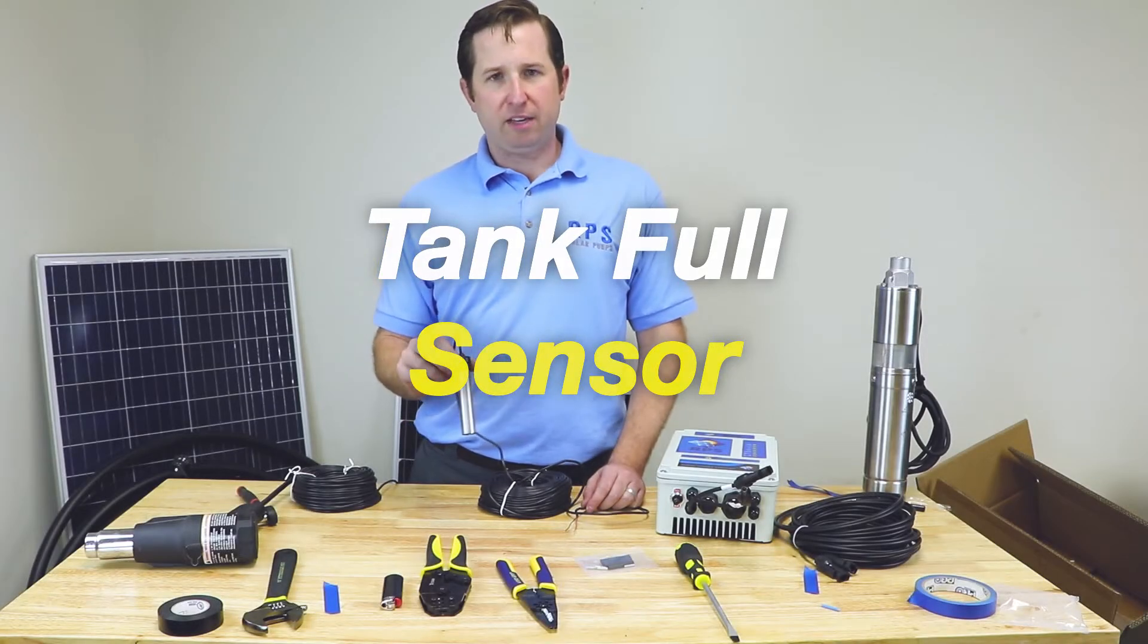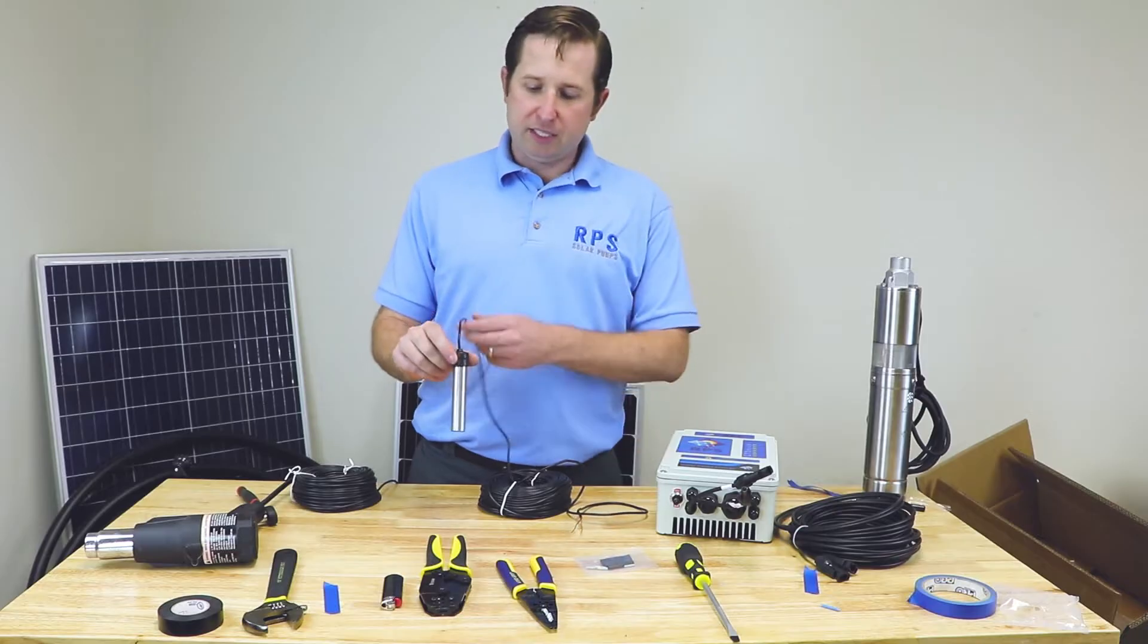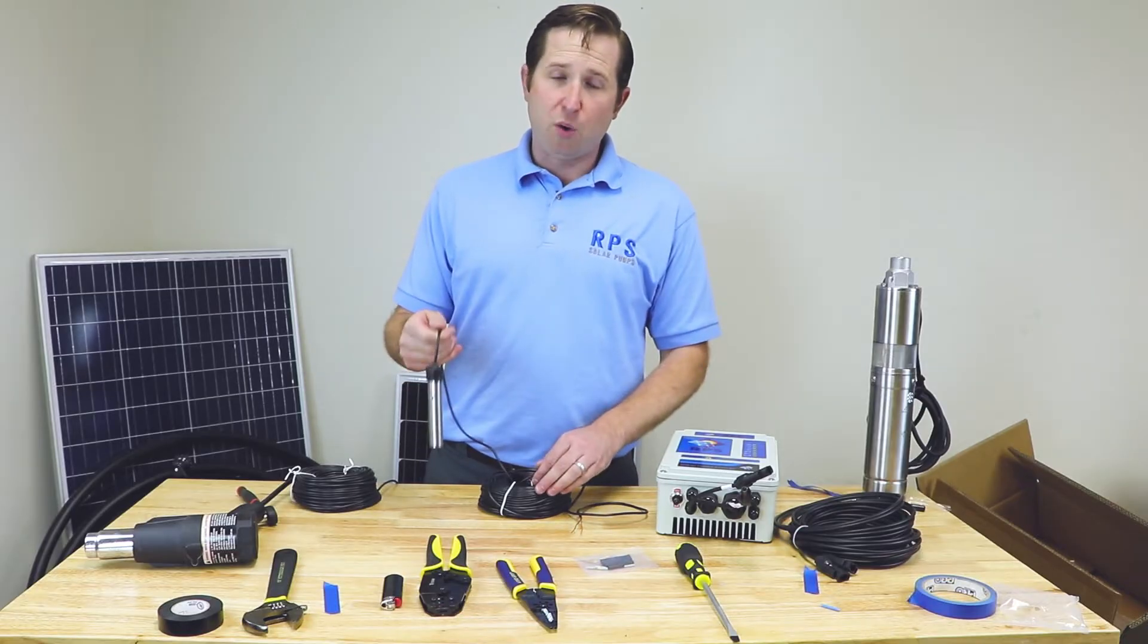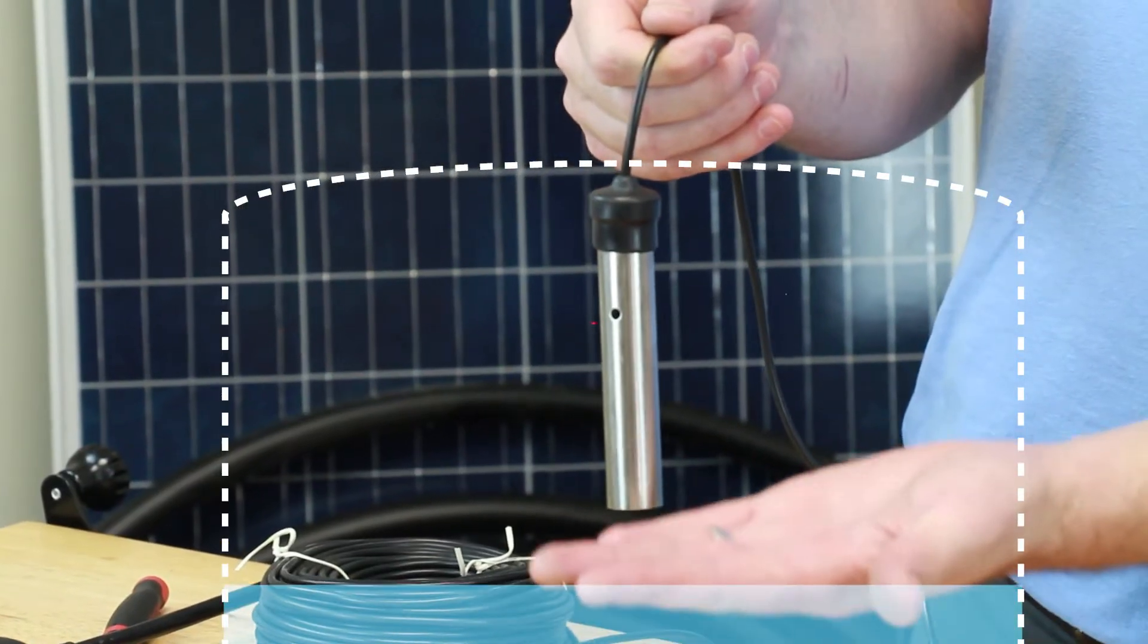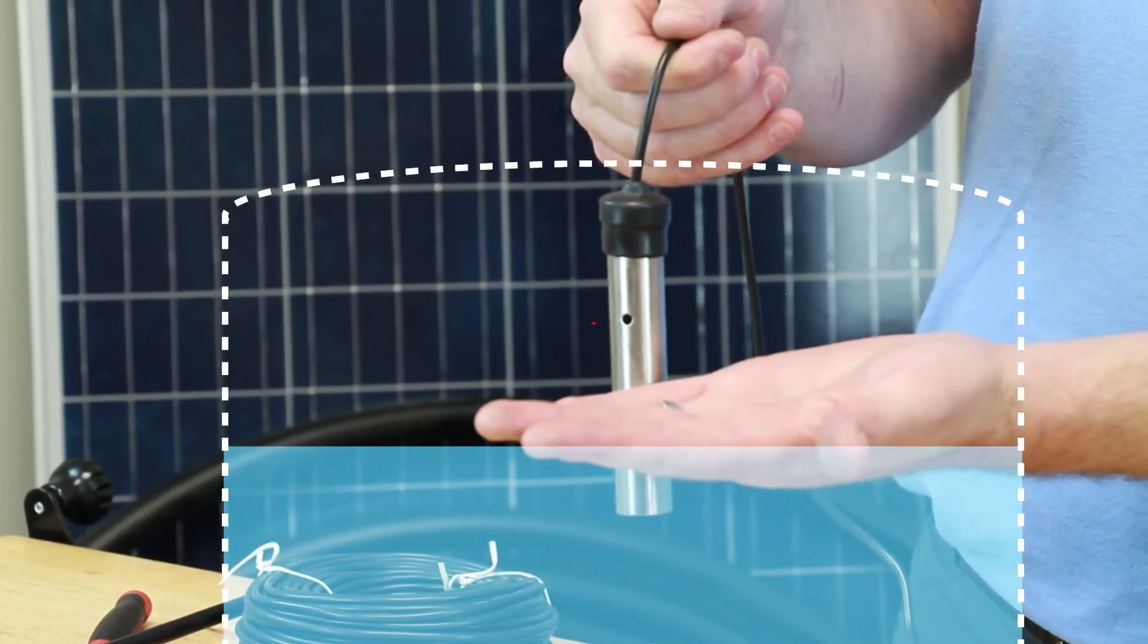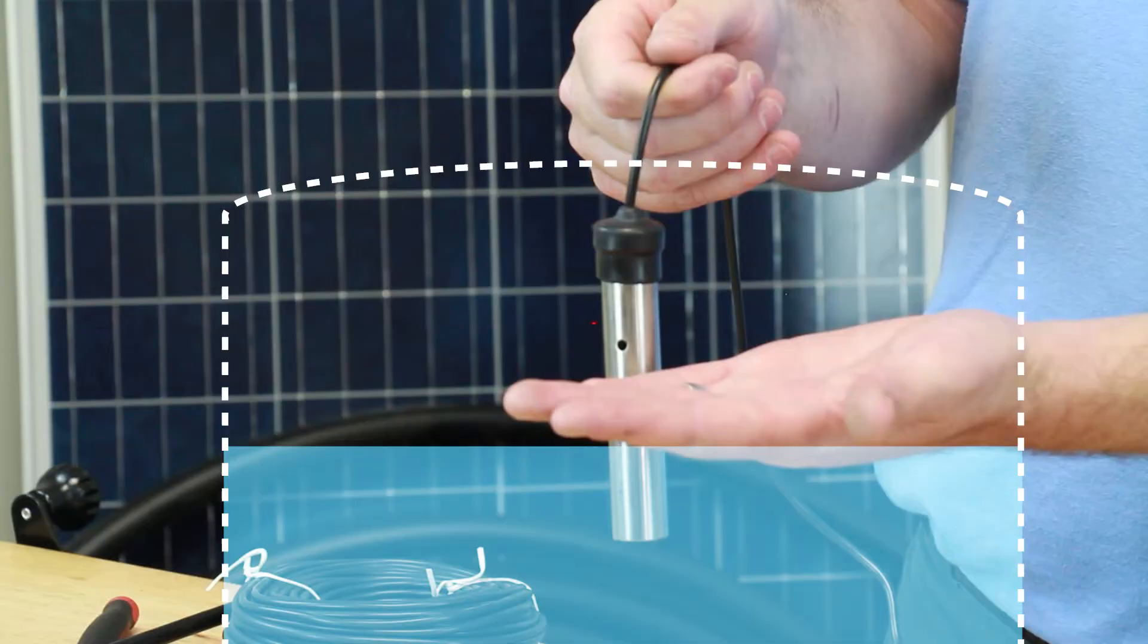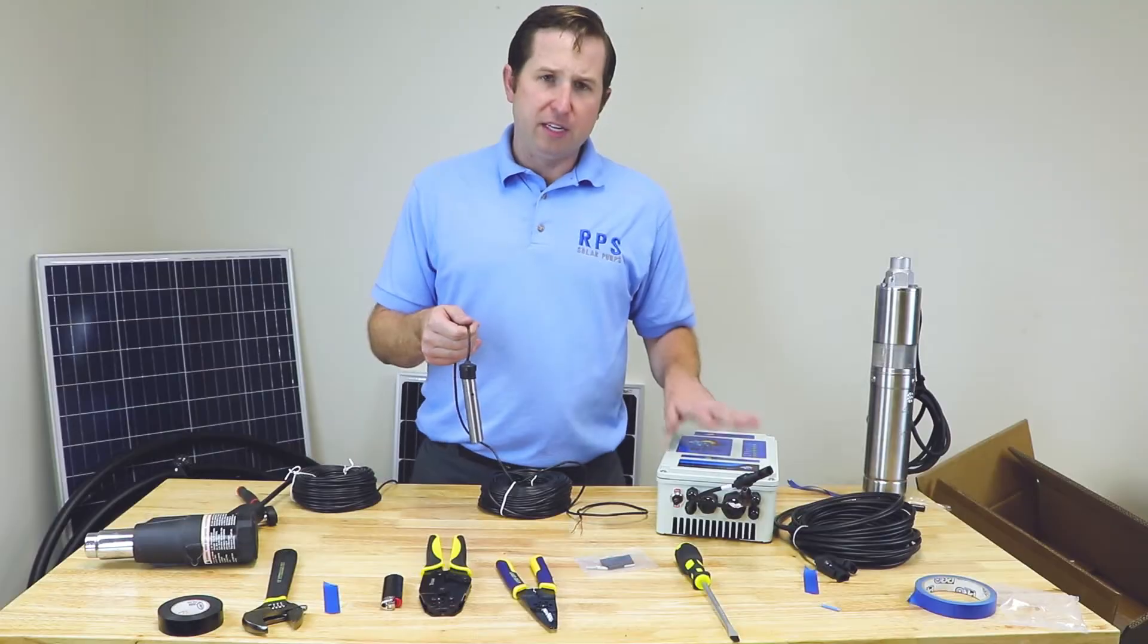We'll use one of our sensors as our tank full sensor. You place this in the top of either your stock tank or your storage tank, and as the water rises with the pump pumping and it touches the sensor, it's going to send a signal back to your controller. It's going to tell your controller to shut off and turn off the pump so you don't overflow your tank.